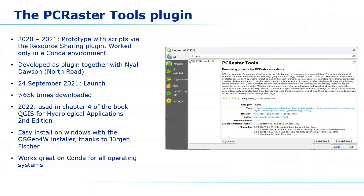Here's a little history of the PCRaster Tools plugin development. In 2020 I started experimenting with PCRaster and QGIS in a Conda environment, because QGIS and PCRaster were both available through Conda-Forge, and it was the only supported way to install PCRaster. In this way I could prototype the plugin using processing scripts that I could share through the resource sharing plugin. When this was ready I contacted Niall Dawson from Northroad to develop the plugin further to be made available through the plugins repository of QGIS. We launched the plugin on 24 September 2021, and since then it has been downloaded more than 65,000 times. In the second edition of the book QGIS for Hydrological Applications I replaced the Saga workflow with the PCRaster workflow. Thanks to Jurgen Fischer it's now also possible to install PCRaster through the OSGeo4W installer.